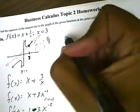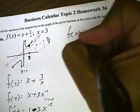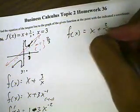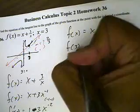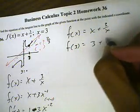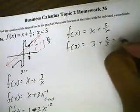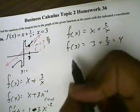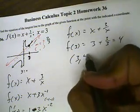Now we need a point. To get the point, we take the original function, x plus 3 over x, and put 3 into the function itself. So that'll be 3 plus 3 over 3, which is 4. Our point is 3 comma 4.